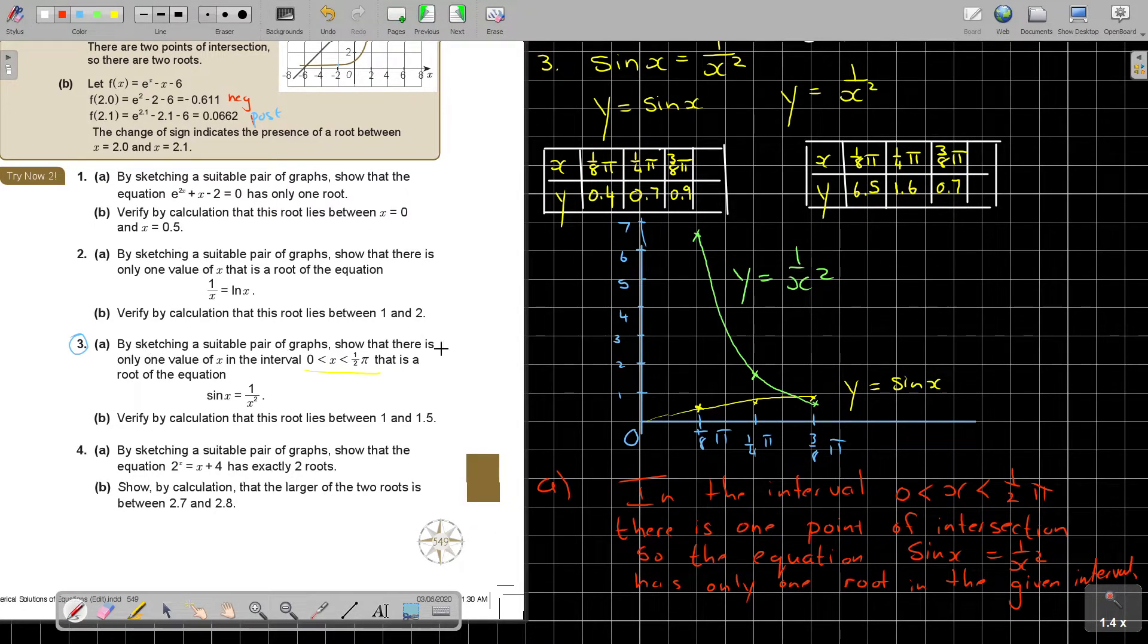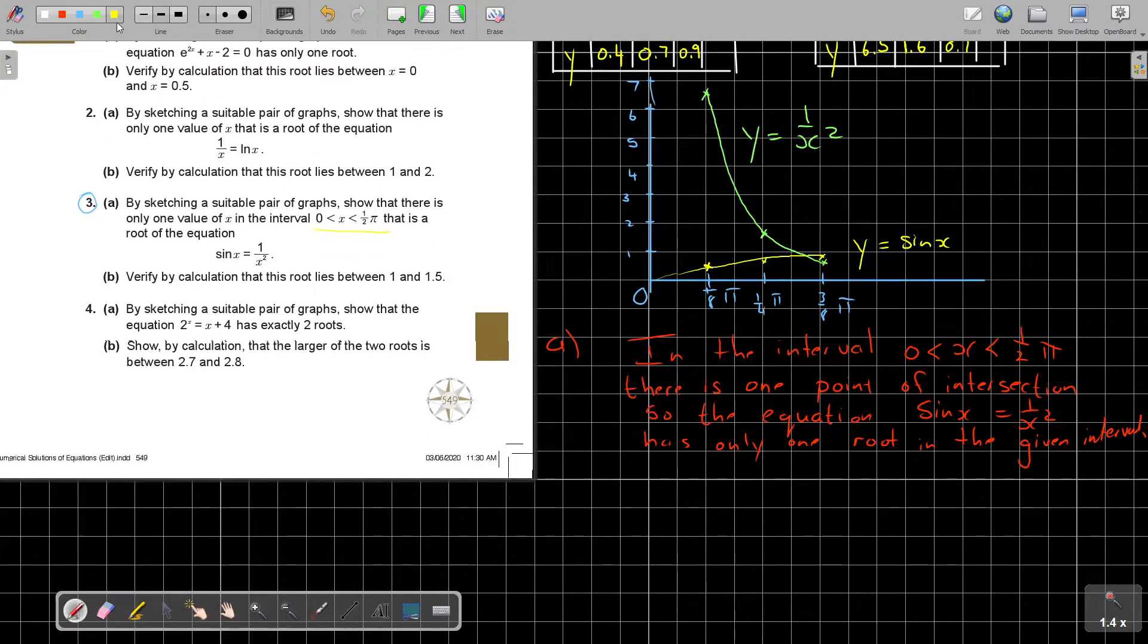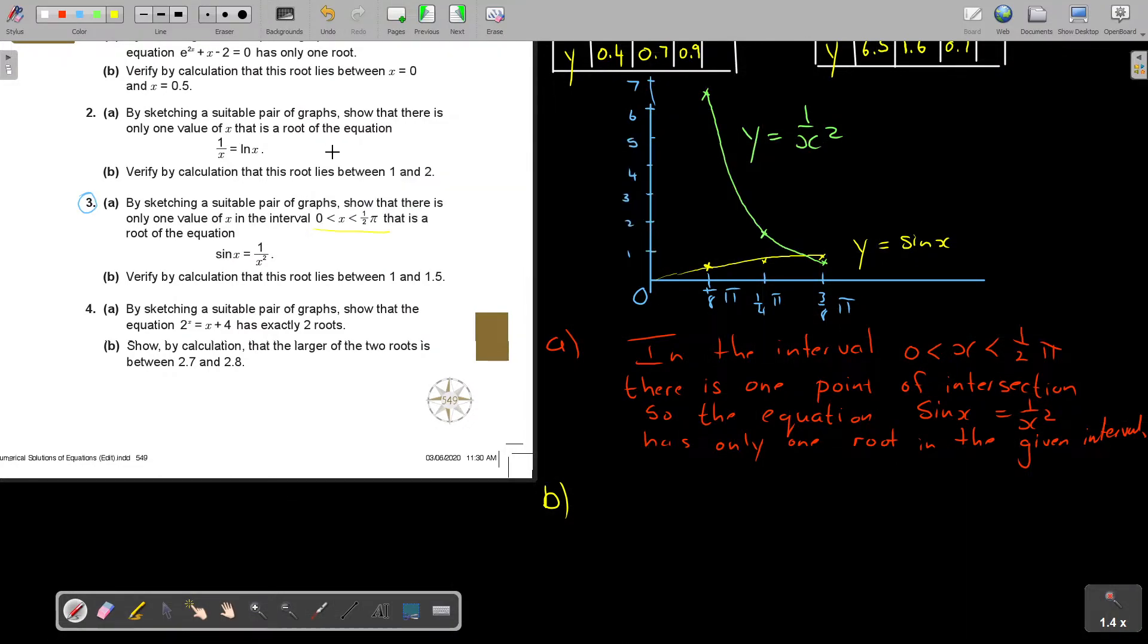So now, by sketching, show that there's only one value. Verify by calculation that this root lies between 1 and 1.5. And I will show you now on the graph. But let's start first with number b. Now, I usually want to get my grid away. Otherwise, it's too many lines.